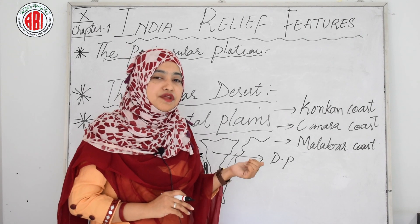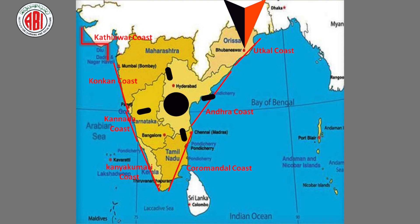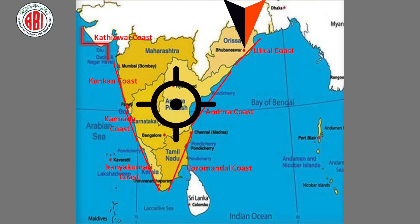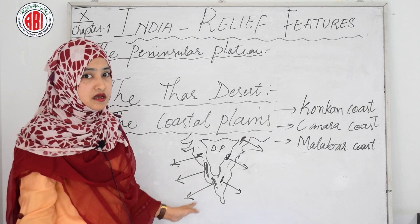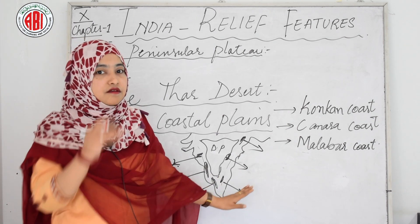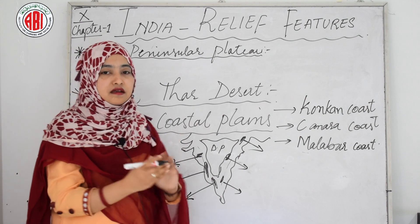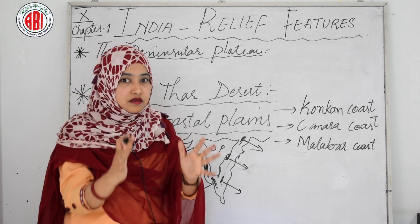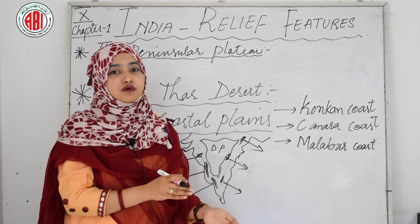The eastern coastal plains include the Utkal coast in Orissa, the Circar coast in Andhra Pradesh and the Coromandel coast in Tamil Nadu. Both the eastern and western coastal plains are each divided into three coasts, situated in specific states.